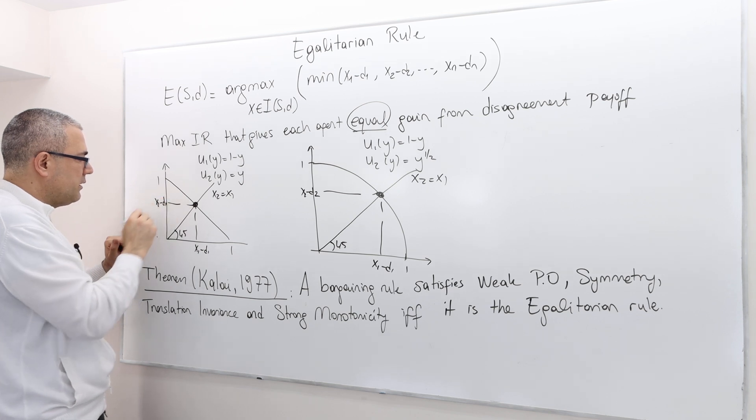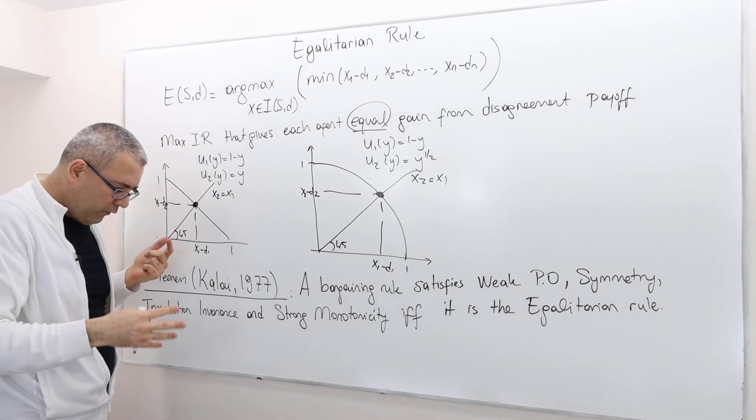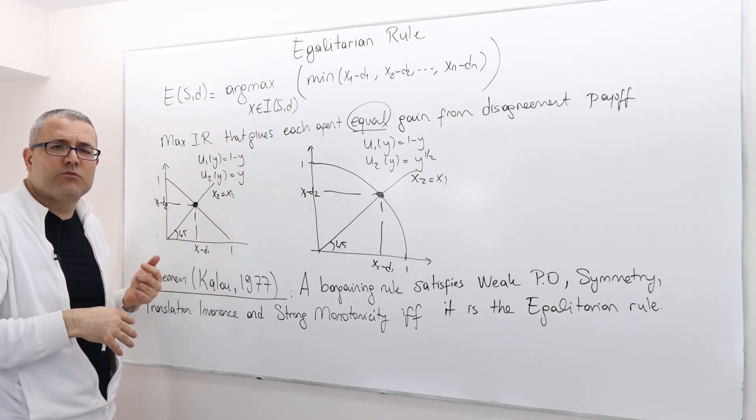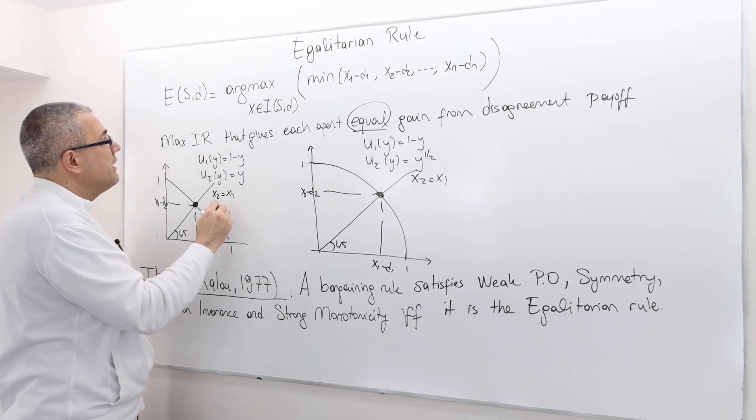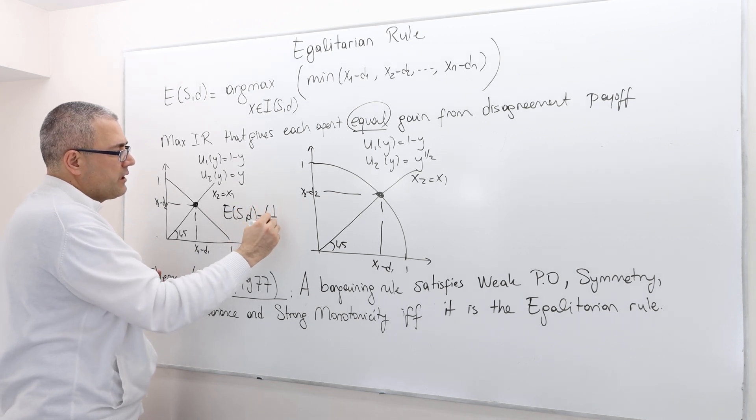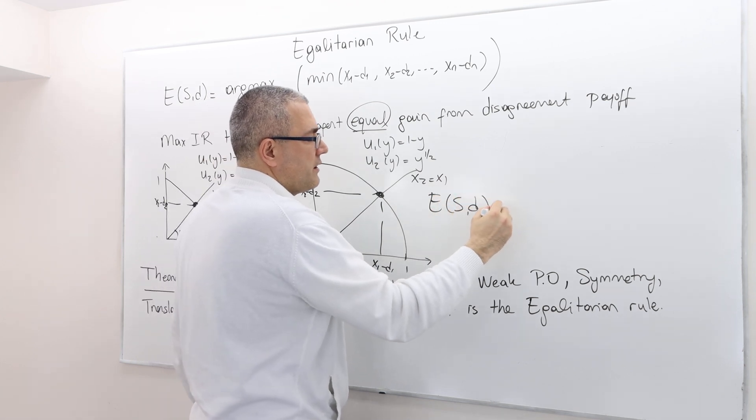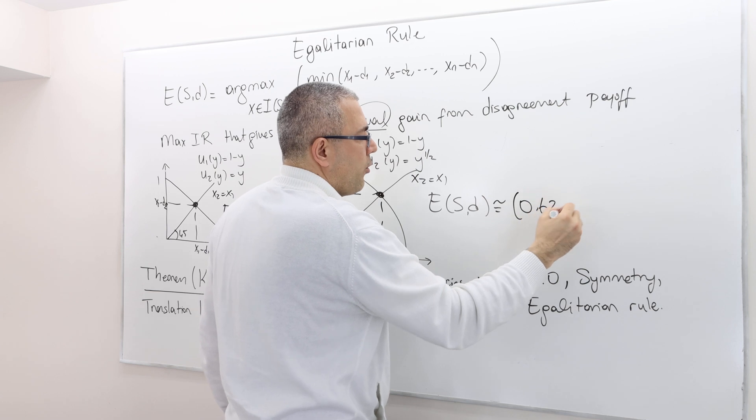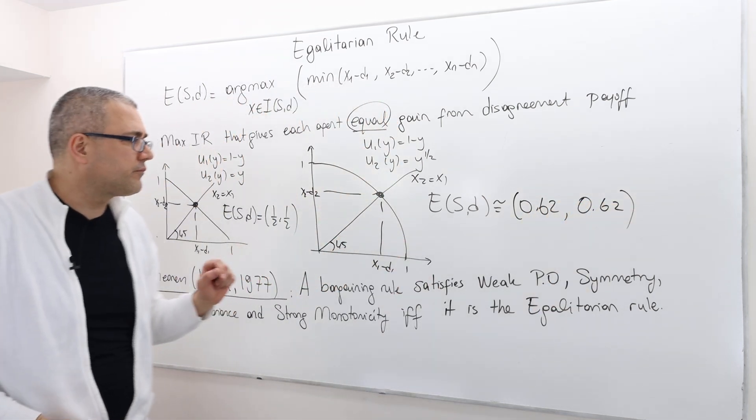So I'm not going to solve it because the Kalai-Smorodinsky outcomes and the egalitarian rule outcomes are exactly the same. So here, the egalitarian rule is going to suggest one half, one half. And here, the egalitarian rule is going to suggest I'm going to round the numbers 0.62, 0.62 payoff wise.